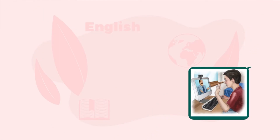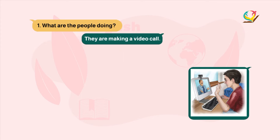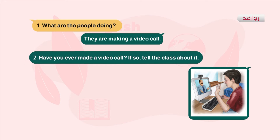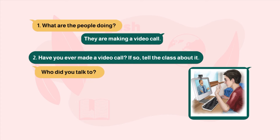Look at the pictures that appear on the screen to answer the two questions. Activity 2: look at the pictures and answer the questions. Number 1: what are the people doing? ماذا يفعل الأشخاص الموجودين في الصورة؟ Number 2: have you ever made a video call? هل عمرك فعلت مكالمة فيديو؟ If so, tell the class about it. Number 1: who did you talk to?